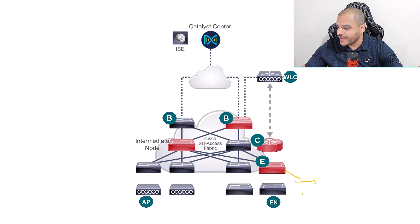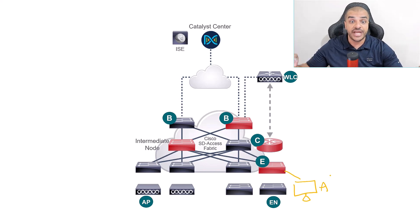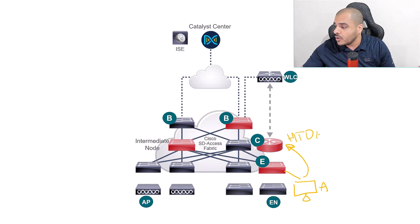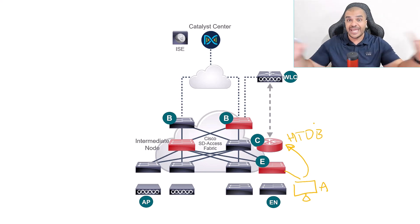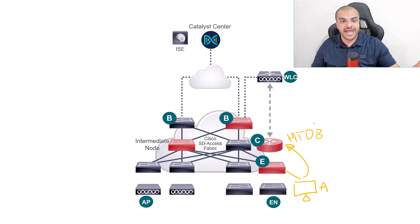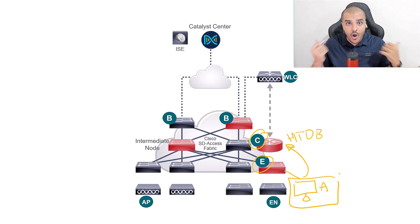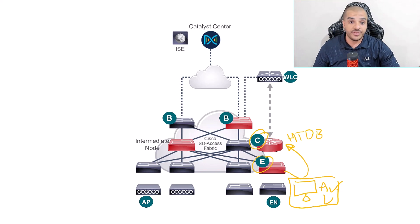The edge node is the closest possible device to the end users, and it's responsible to register all the IP addresses and MAC addresses of each and every end user with the control plane node. We're contributing in building up the database — the biggest database of the entire fabric — which is called the host tracking database. The edge node is gonna register those IP addresses and MAC addresses with the control plane node, including its own address. It's gonna say: 'Mr. Control Plane Node, I am the edge node, I'm the one responsible for this device A, and I'm trying to tell you — tie between my own IP address and its IP and MAC address.' All of this is gonna be combined and registered with the control plane node.